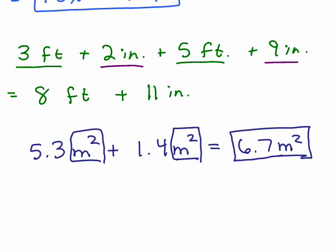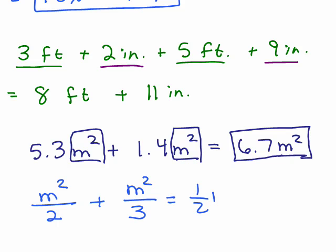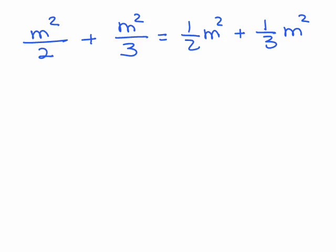Notice you just write exactly the same variable part down but you add the coefficients. Do not add the exponents or multiply the exponents — it's still m squared. You've got 5.3 of these things and 1.4 of those things; altogether I'm going to have 6.7 of exactly the same thing. The same thing would go with fractions — let's say you have m squared over 2 plus m squared over 3. This is a little tricky: the coefficient here is 1 half and the coefficient here is 1 third. See if you can remember how to add 1 half plus 1 third and write your final answer.